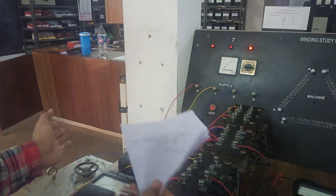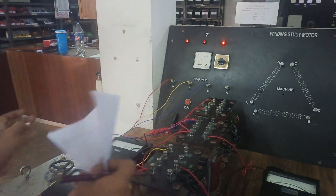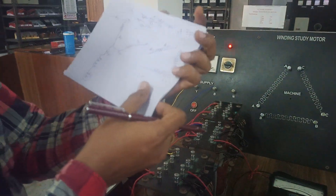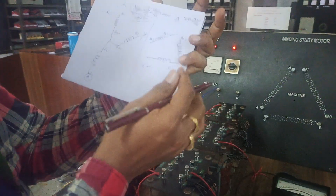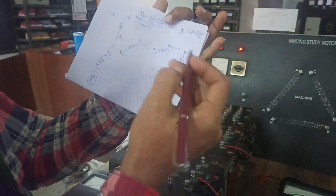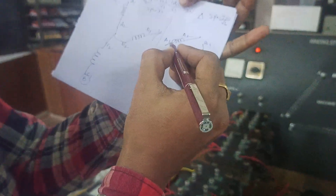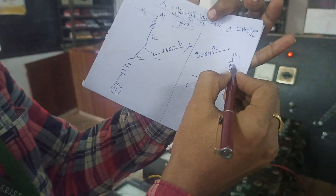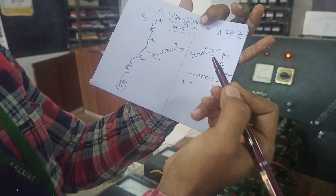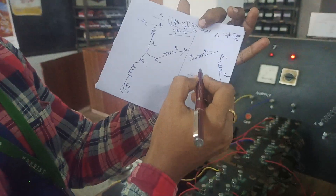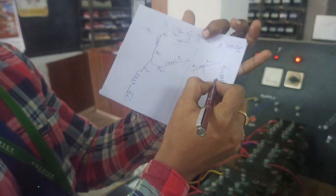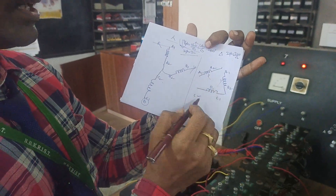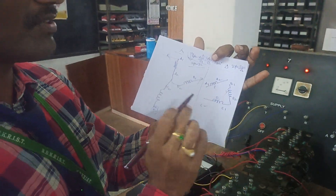Similarly, if you want to connect primary delta and secondary delta, these connections will play a major role. We have three windings: R phase is A1, A2; Y phase is B1, B2; and B phase has C1 and C2. Any winding will have two terminals.